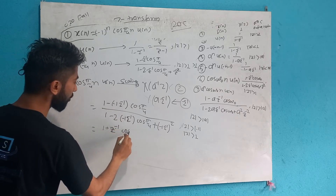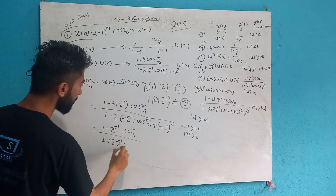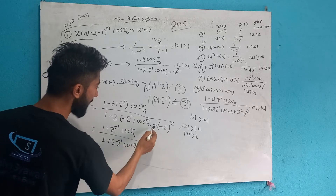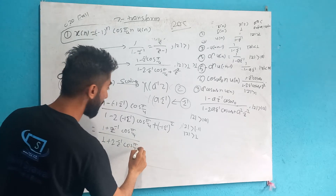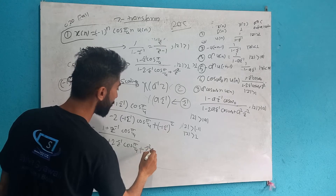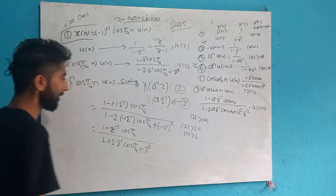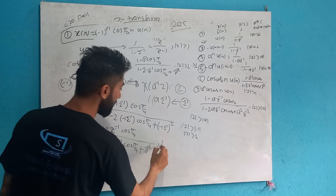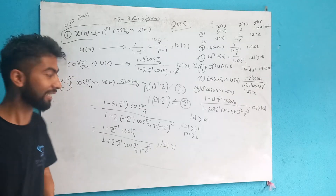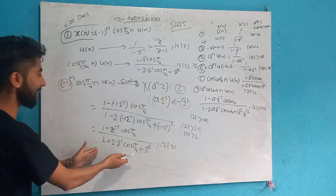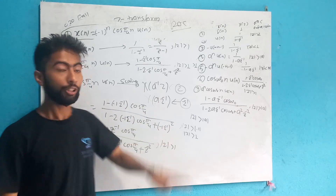cos pi by 4 minus pi by 4, minus into minus pi by 4, minus 1 is squared plus 1, plus z inverse squared plus z minus 2 power multiply. This is our answer.